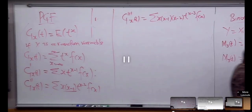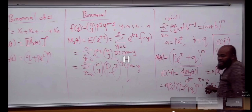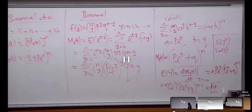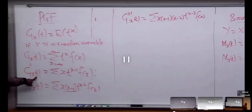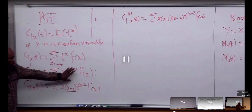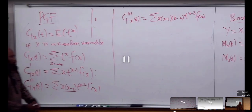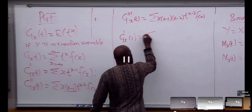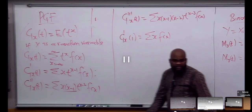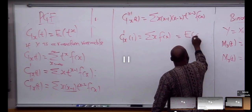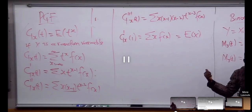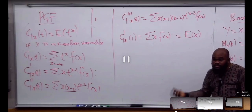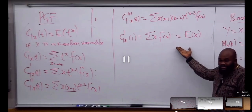In the moment generating function we were plugging T equals 0, right? In the probability generating function, we're going to be plugging in 1. If I plug in 1 to the first derivative, I'm actually going to see the first moment about the origin — that is the mean. That's how you derive the mean using the probability generating function.